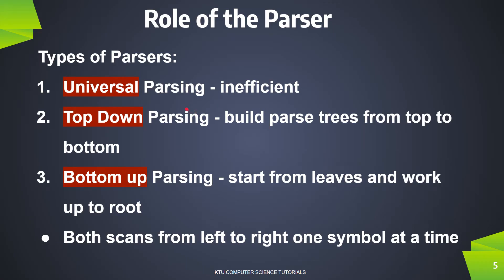This is the role of parsing. One is universal parsing, top-down parsing, and bottom-up parsing. This is the role of parsing in all types of grammars, but it is considered inefficient in the case of some grammars. In the case of a parser, you can generate a parse tree from top to bottom or bottom to top.